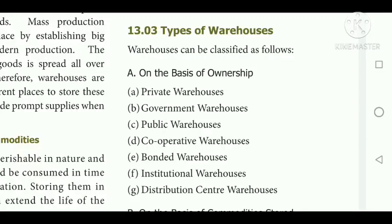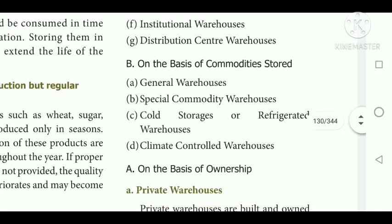Now we are going to see the types of warehouses. Warehouses can be classified on two bases: on the basis of ownership and on the basis of commodity stored. On the basis of ownership there are six categories: private warehouse, government warehouse, public warehouse, cooperative warehouse, bonded warehouse, institutional warehouse, and distribution center warehouse. On the basis of commodity stored: general warehouse, special commodity warehouse, cold storage warehouse, and climate control warehouse.